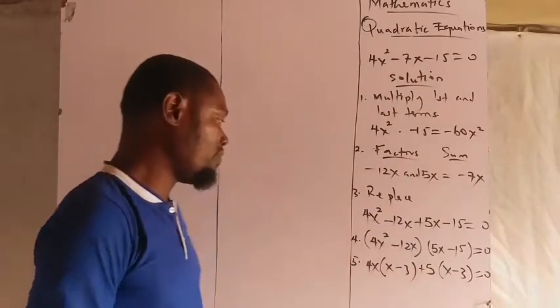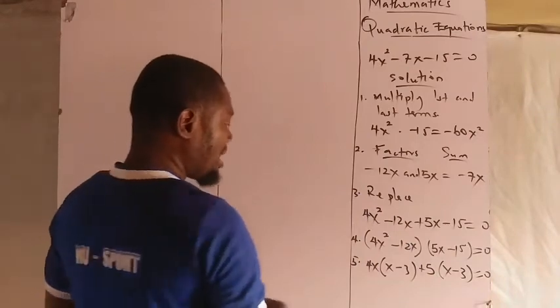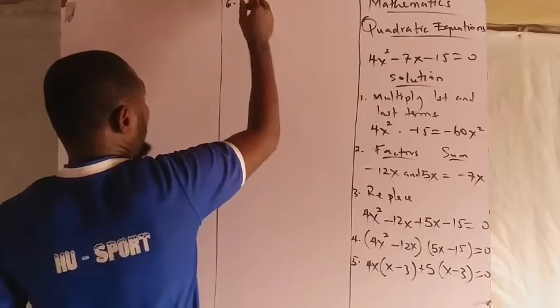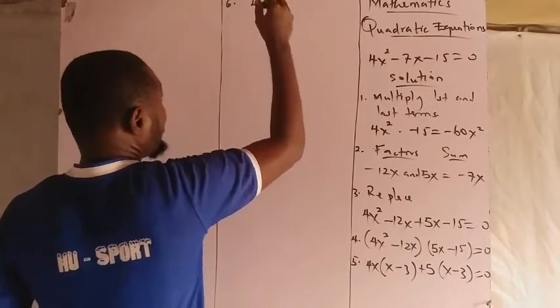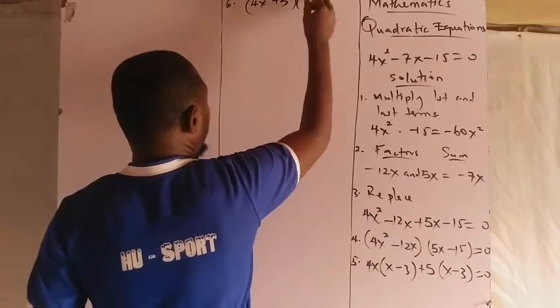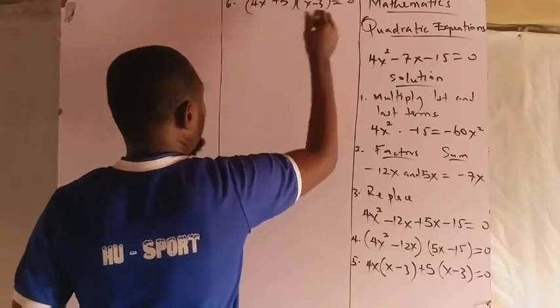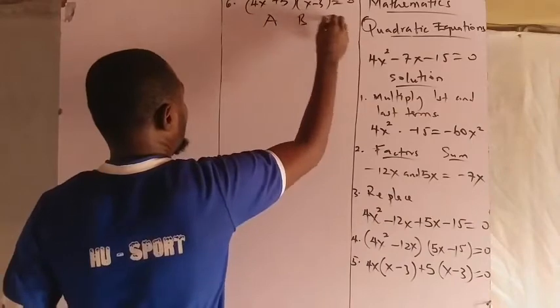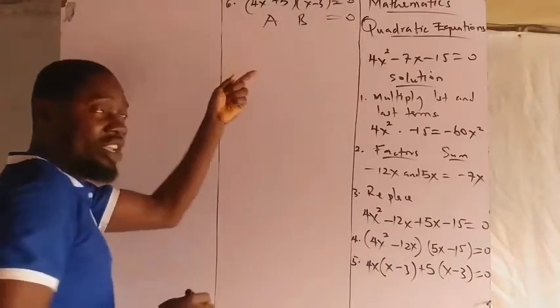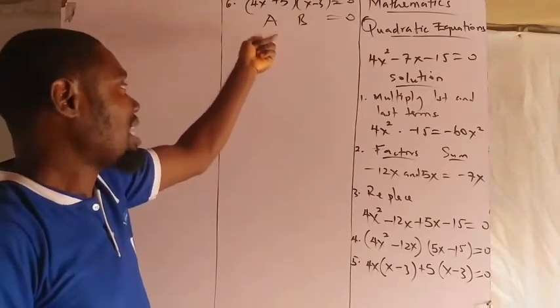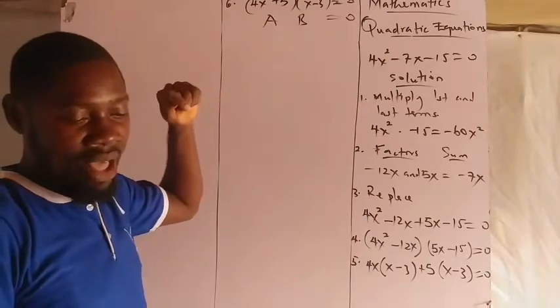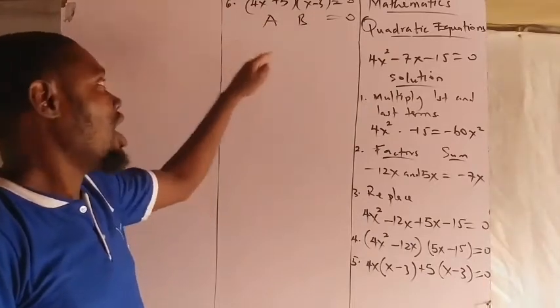You see that the first bracket and the second brackets are the same. Now bring out the numbers that are out of the bracket, put them in a new bracket. You have 4x + 5 in the new bracket, and then x - 3 = 0. Then we can now apply our ab = 0 principle here. This is where this principle is applied. That is the reason why I needed to teach you the principle to help you deal with problems of this type.